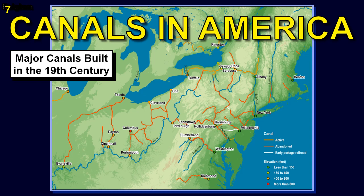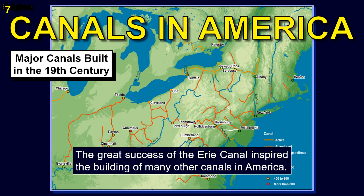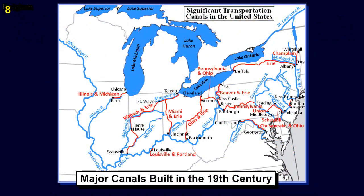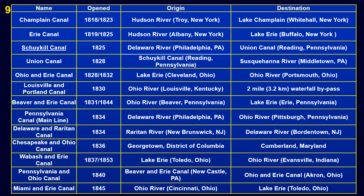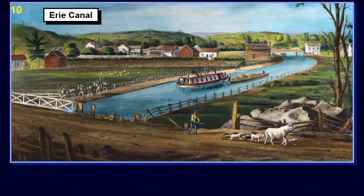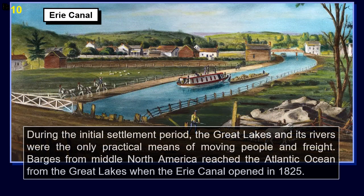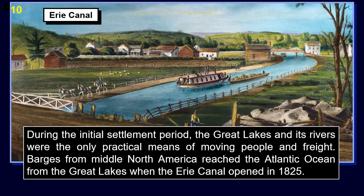The great success of the Erie Canal inspired the building of many other canals in America. These are major canals built in the U.S. in the 19th century — a chronological list of the most significant canals used by settlers. During the initial settlement period, the Great Lakes and its rivers were the only practical means of moving people and freight. Barges from Middle North America reached the Atlantic Ocean from the Great Lakes when the Erie Canal opened in 1825.